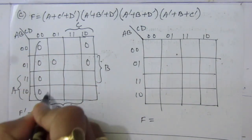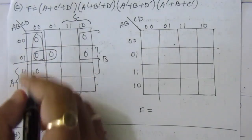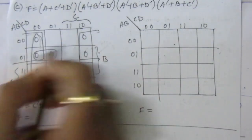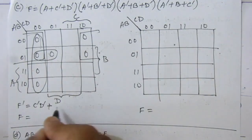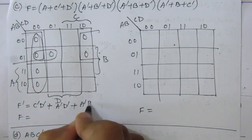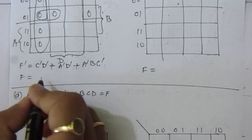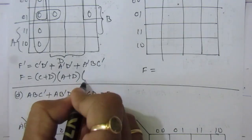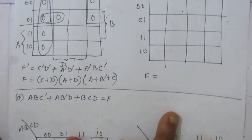From the K-map we combine the zeros: this will be one term, this will be the second term, and this will be the third term. From the first combination we get c-bar d-bar; from the second combination we get a-bar d-bar; and from the third we get a-bar b. So f' = c-bar d-bar + a-bar d-bar + a-bar b. Applying De Morgan's theorem and simplifying, f = (c + d)(a + d)(a + b-bar + c). This is the simplified product of sums expression.